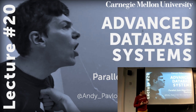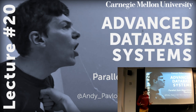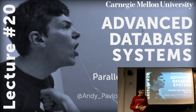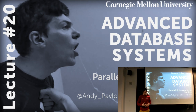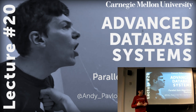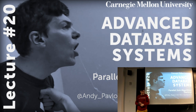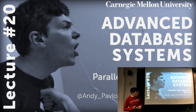This is the second lecture on join algorithms. The last class covered hash joins, which is the dominant join algorithm everyone uses. Today's class covers the second major class of join algorithms: sort merge. Any real OLAP system that wants good performance and never does nested loop joins is going to be doing either hash join or sort merge join, but hash joins are definitely more common.